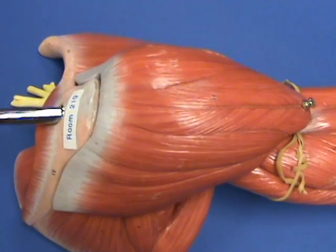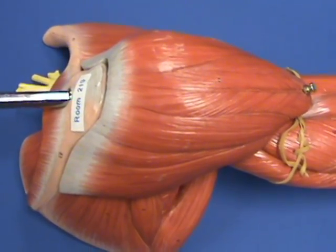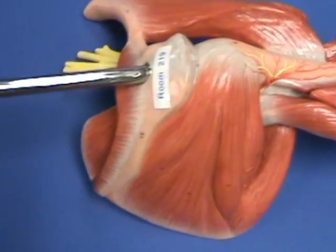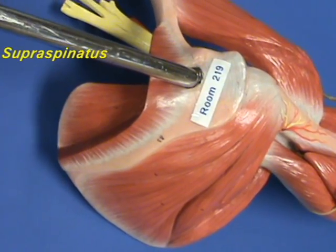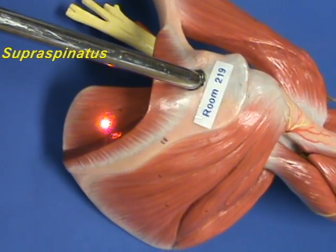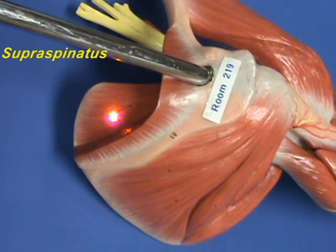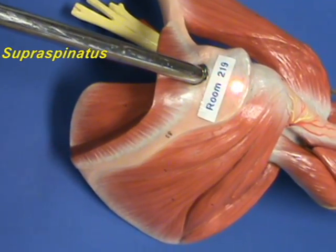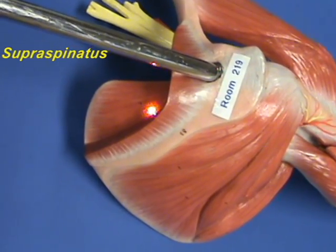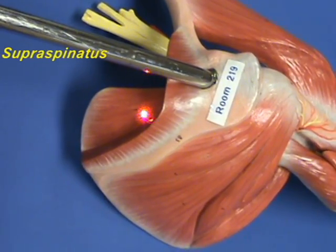Now, I will remove the deltoid muscle from this model so that we can look at the muscles on the posterior side of the scapula. The supraspinatus has an origin on the medial two-thirds of the supraspinus fossa of the scapula, and it inserts on the greater tubercle of the humerus. It is one of the four muscles that form the rotator cuff, and it initiates abduction of the arm.